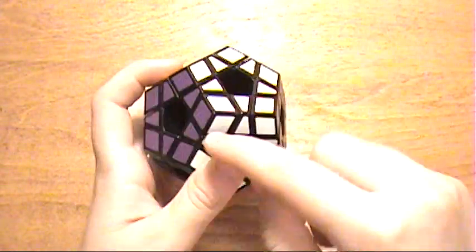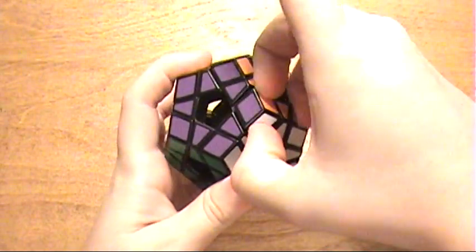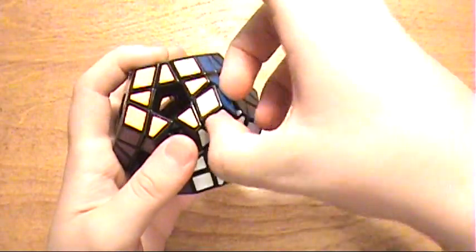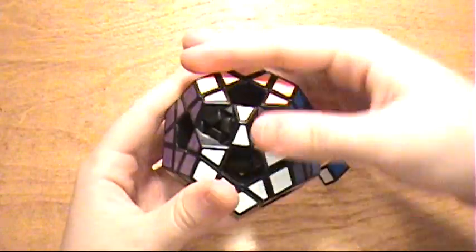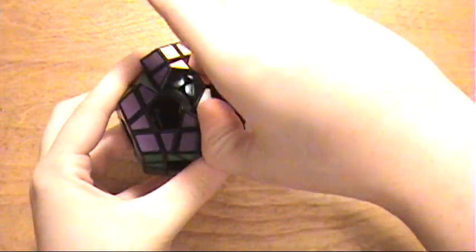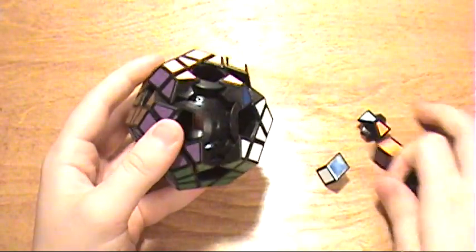To begin, just look for two parallel lines here on a corner and grip them, and then pop out a corner. They come out easy. Do another one with another corner just right next to it. Then rotate it about 40 degrees and pop out the edge. Just continue taking out the pieces.